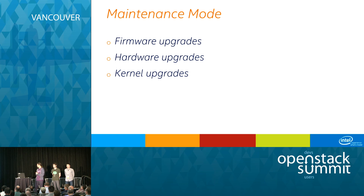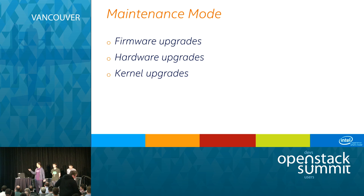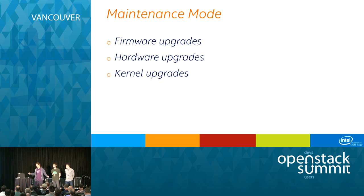The most common use case for live migration is maintenance mode — a scheduled maintenance in which we intentionally want to put down a host. For example, we want to change the firmware, upgrade BIOS, do a hardware upgrade, even replace a whole node, or maybe upgrade the kernel. We simply clean up all the workload resources out of the host and then proceed with whatever we want to do with it.